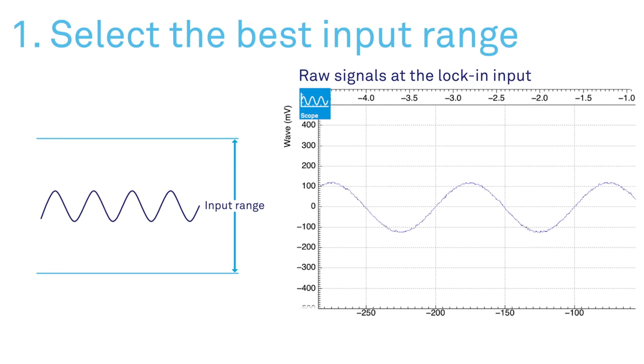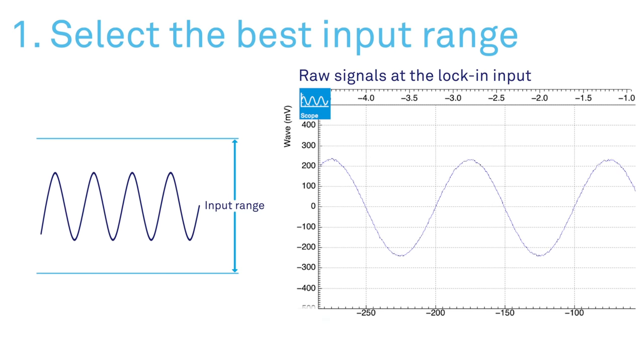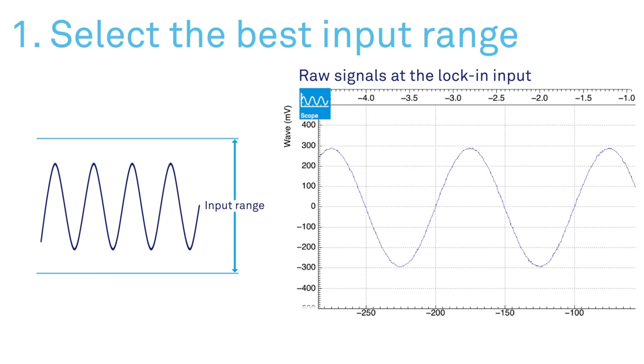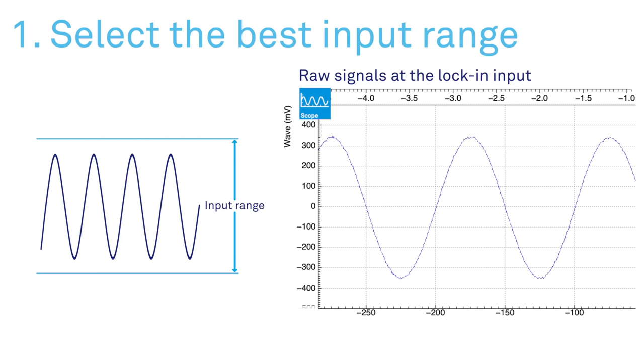Since lock-in amplifiers do not proactively change the input range, you'll need to select the range considering the evolution of the signal throughout the entire measurement.